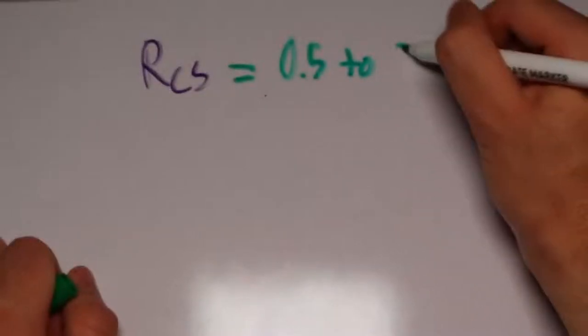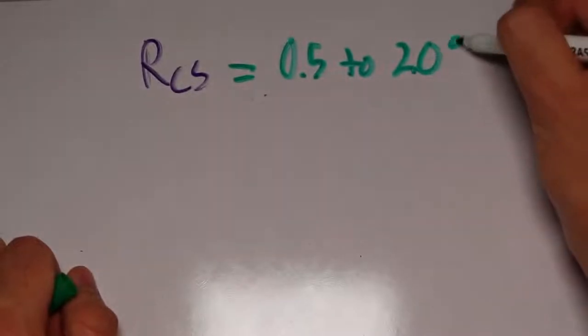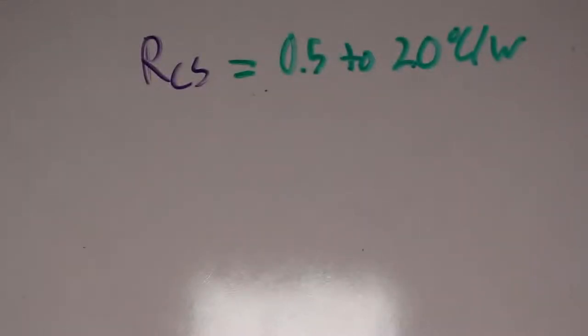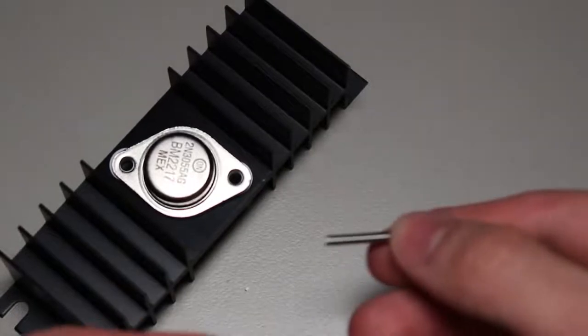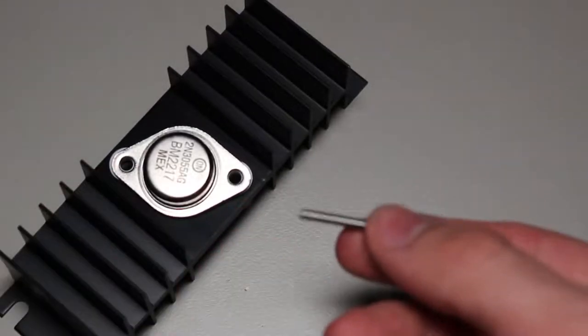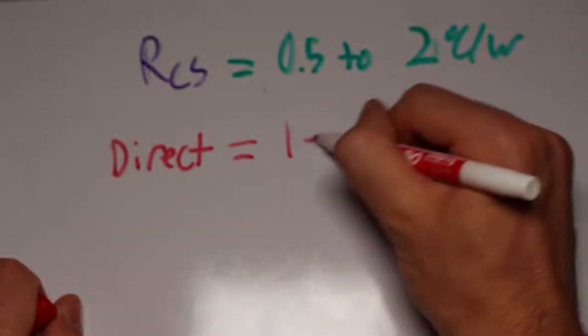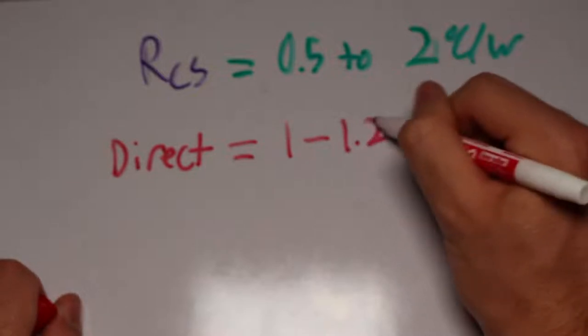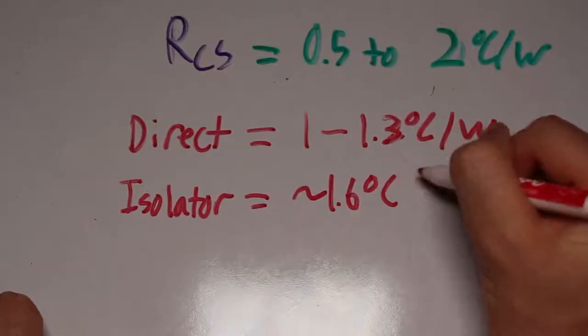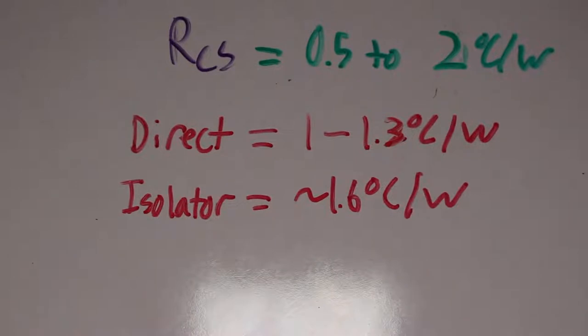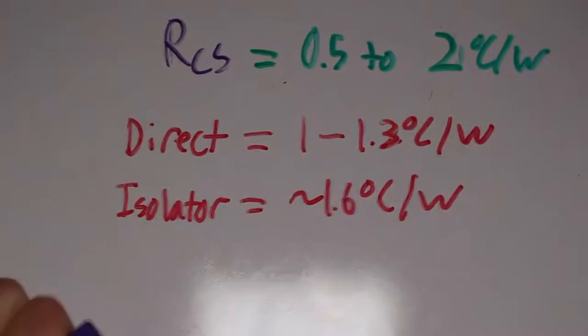The case-to-surface depends on your setup with a heatsink. It is a bit more difficult to get. Its value has a small range from about 0.5 to 2 degrees per watt, depending on how the heatsink is mounted. Direct mounting gives us about 1 to 1.3 degrees per watt, whereas mounting with a mica insulator gives a resistance of about 1.6 degrees per watt. These figures, by the way, are specific to the TO220 package.